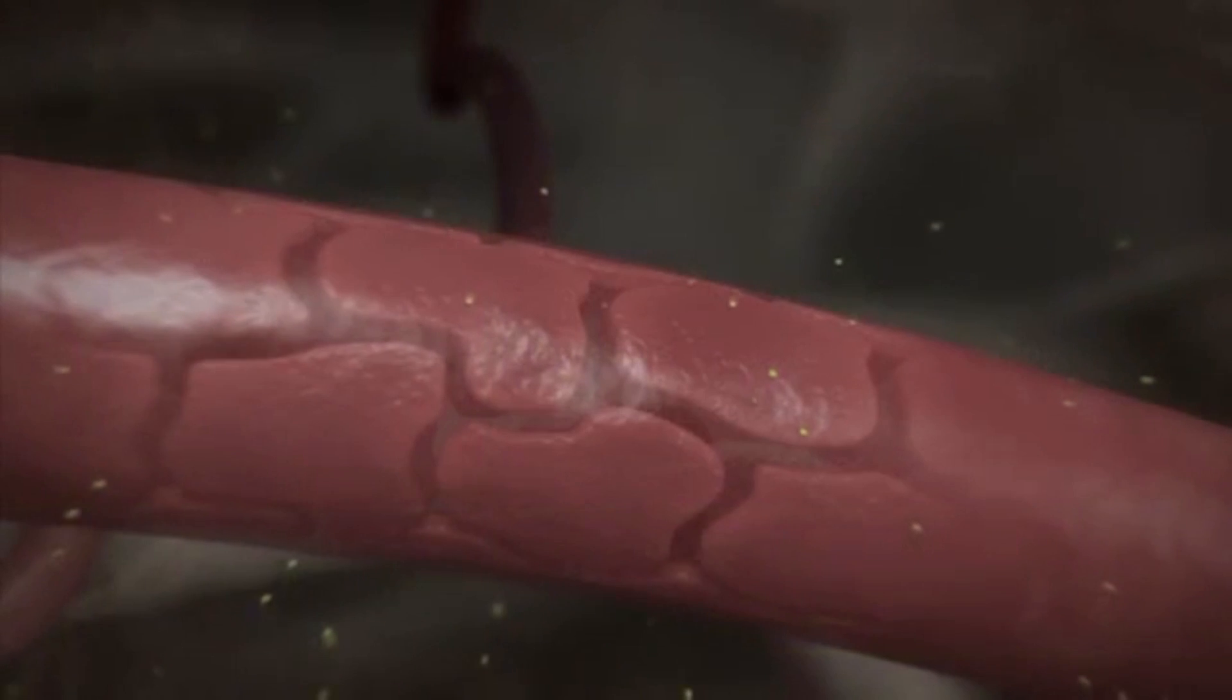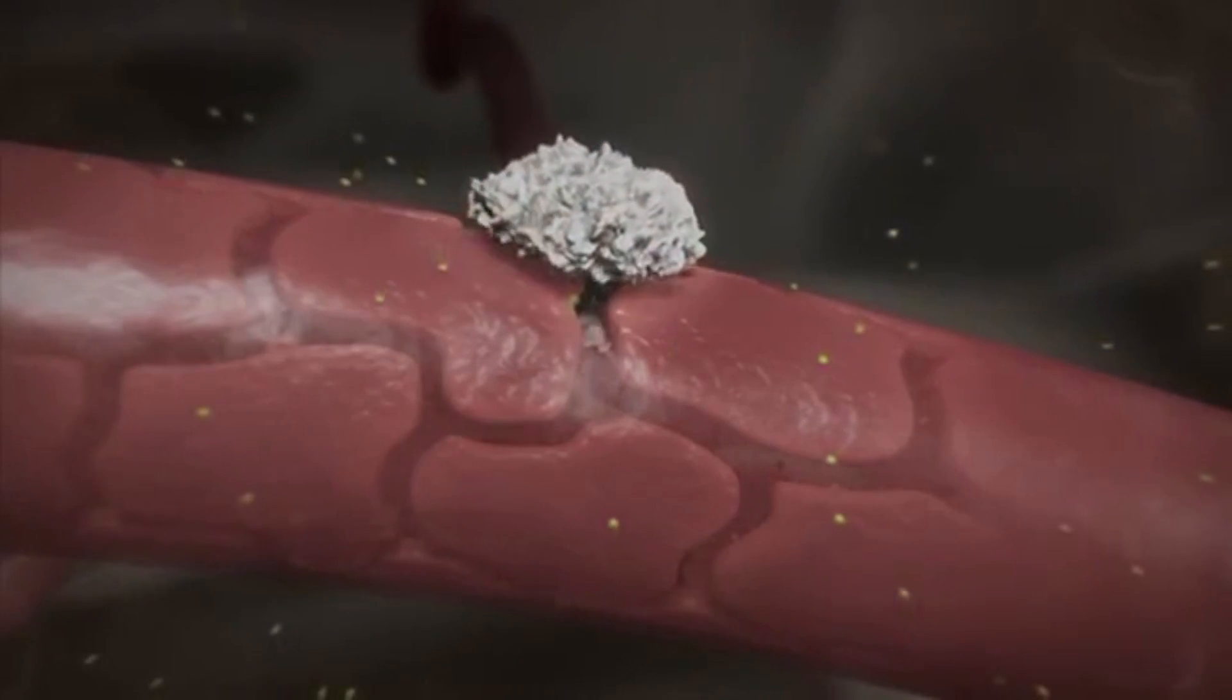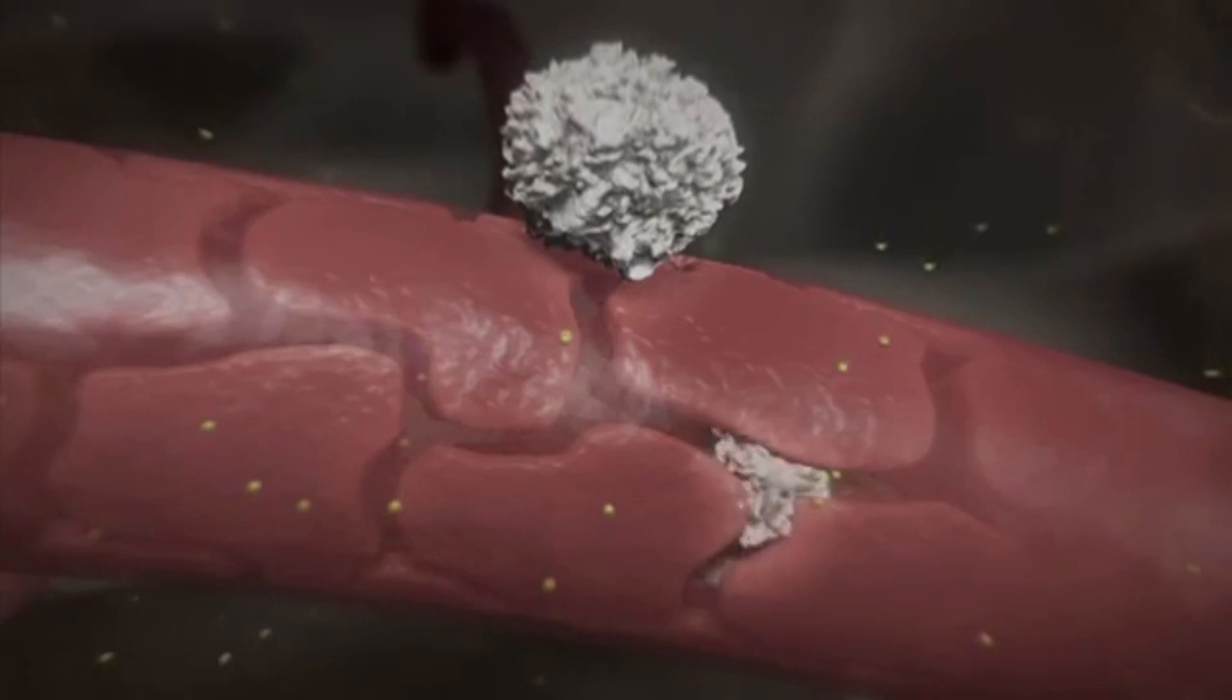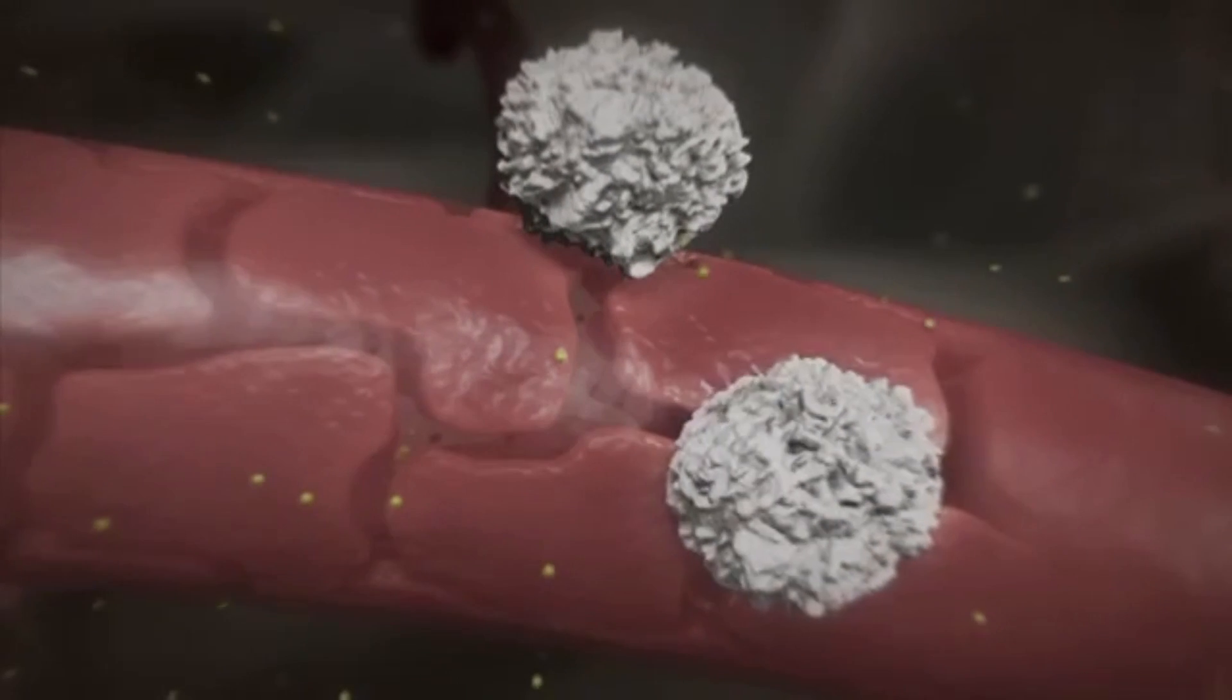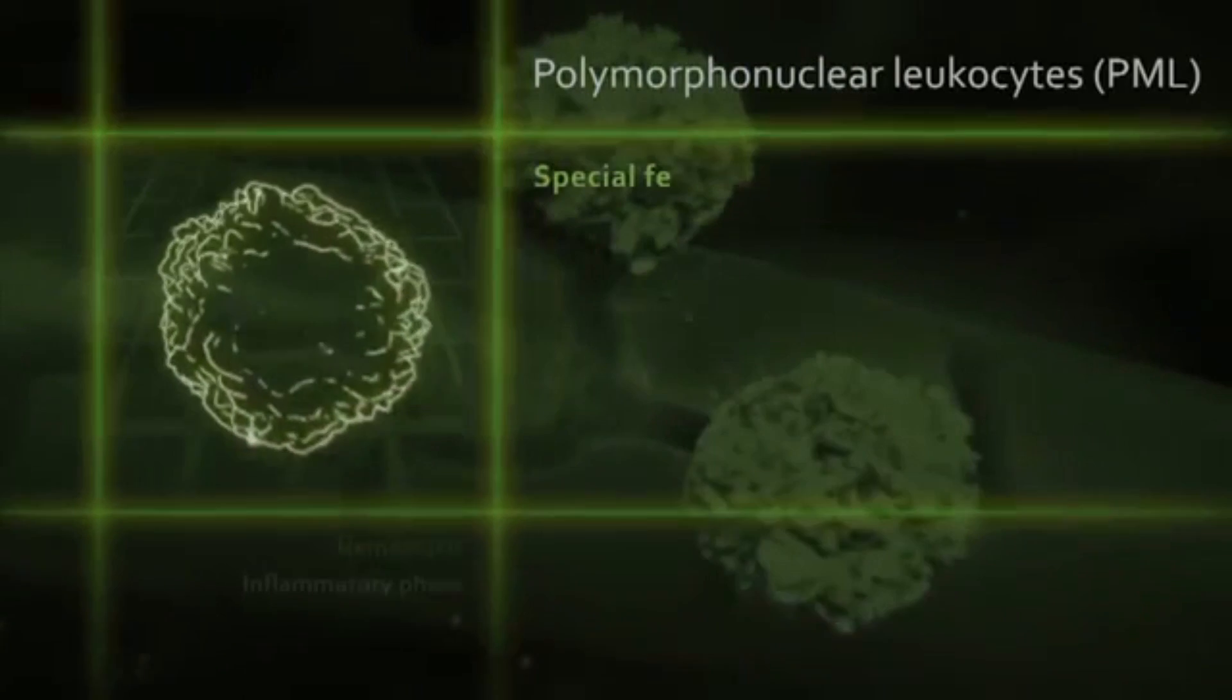On the inside of the vascular walls, endothelial cells promote the attachment of polymorphonuclear leukocytes from the bloodstream. These leukocytes, also known as PMLs, squeeze themselves through the gaps between the endothelial cells. Once they have digested the basal lamina using proteases, they are free to enter the wound.